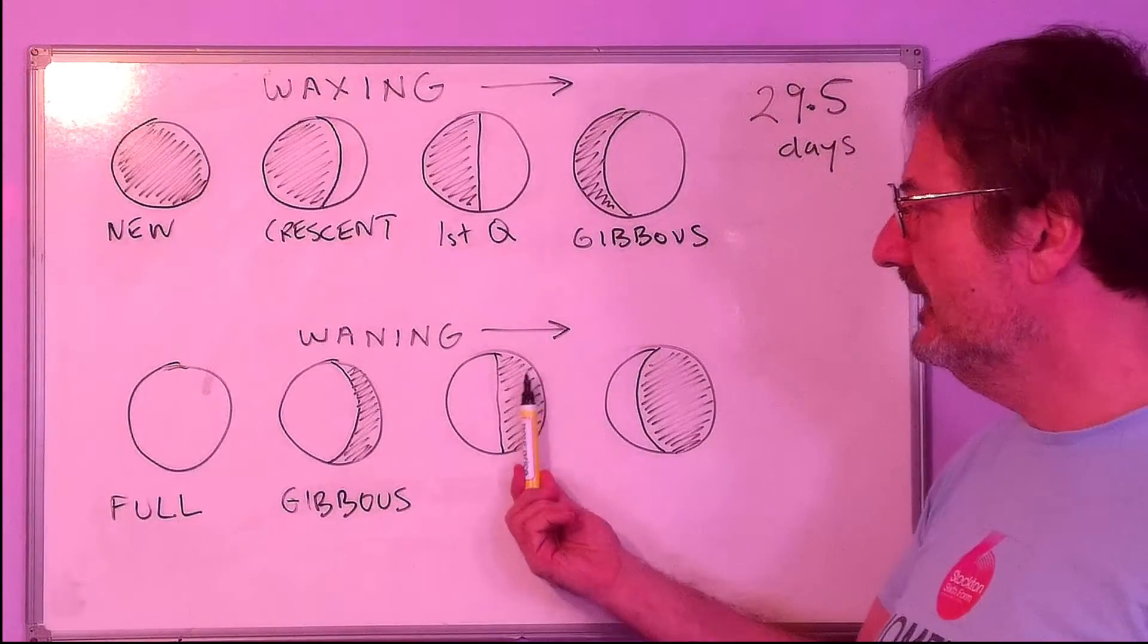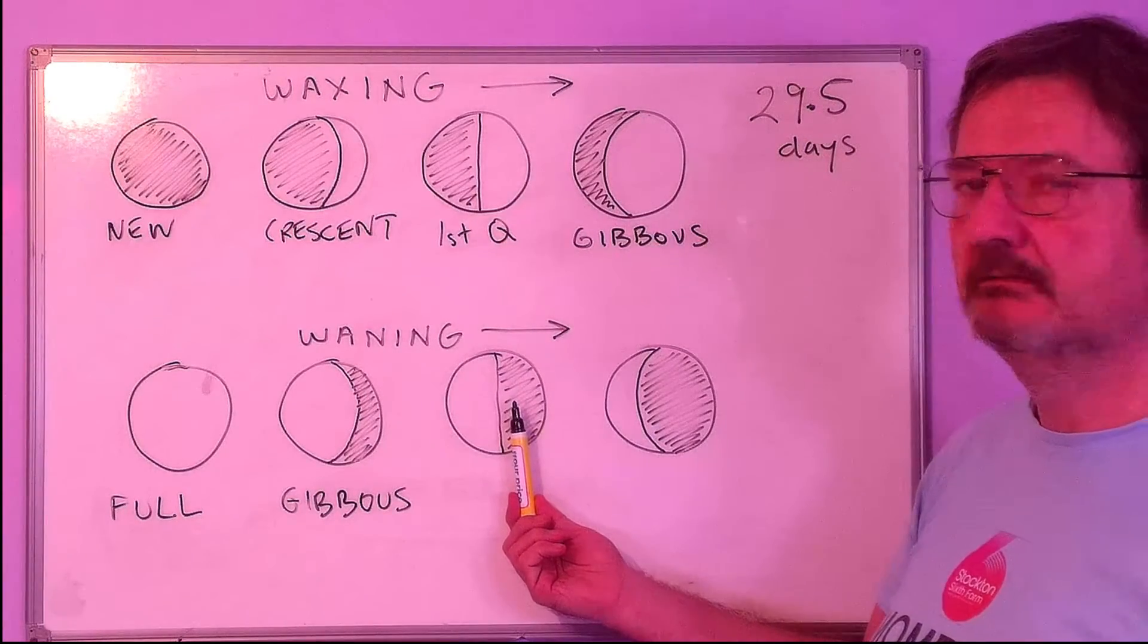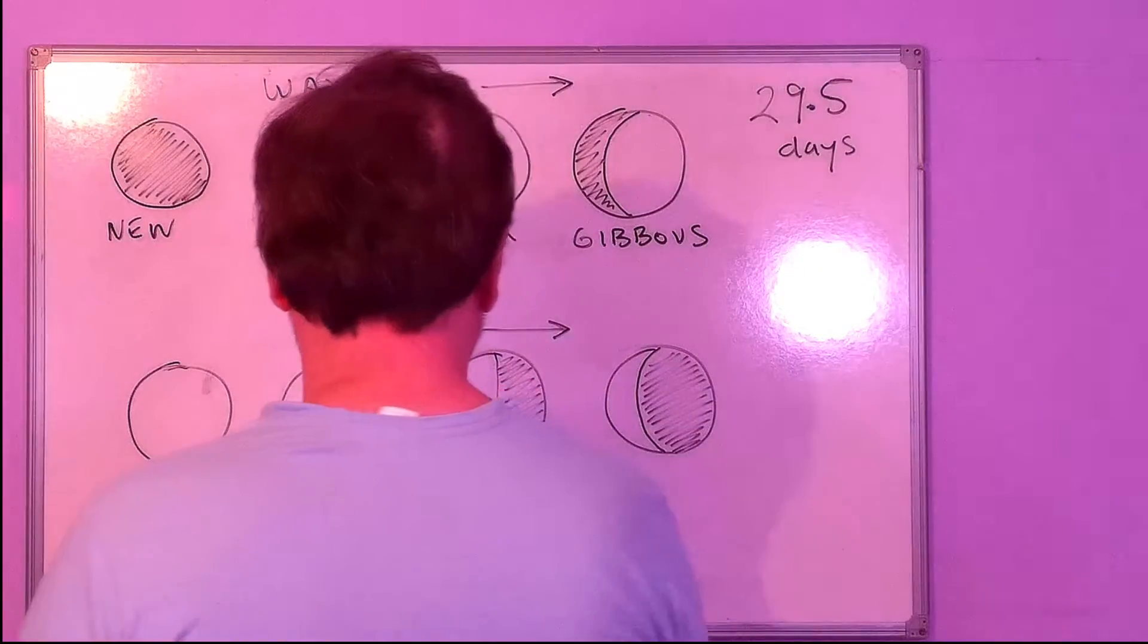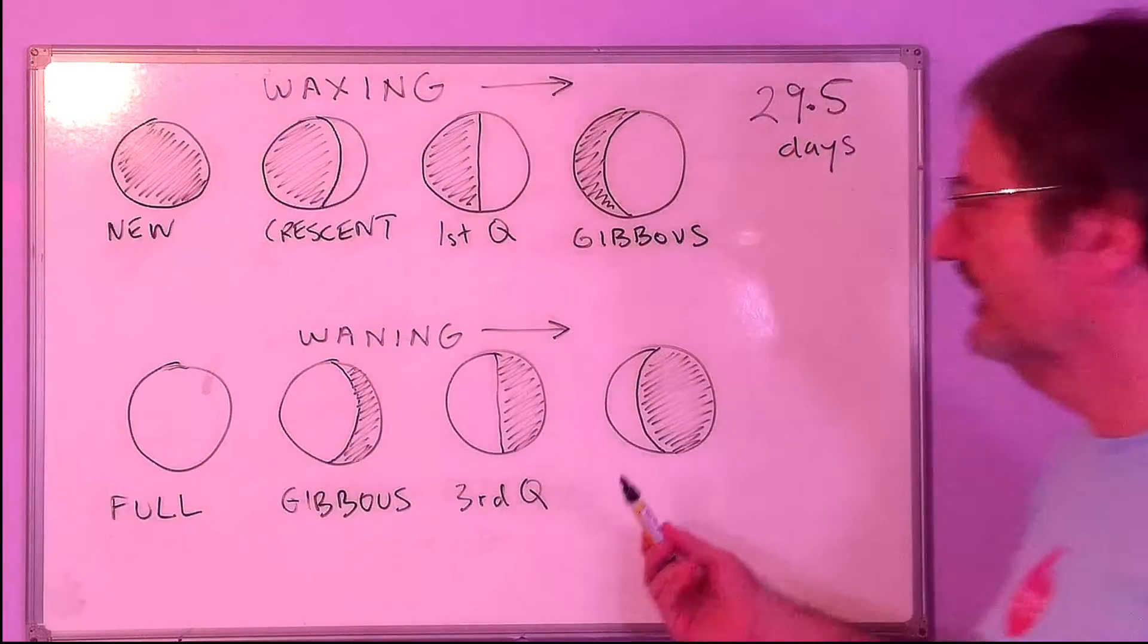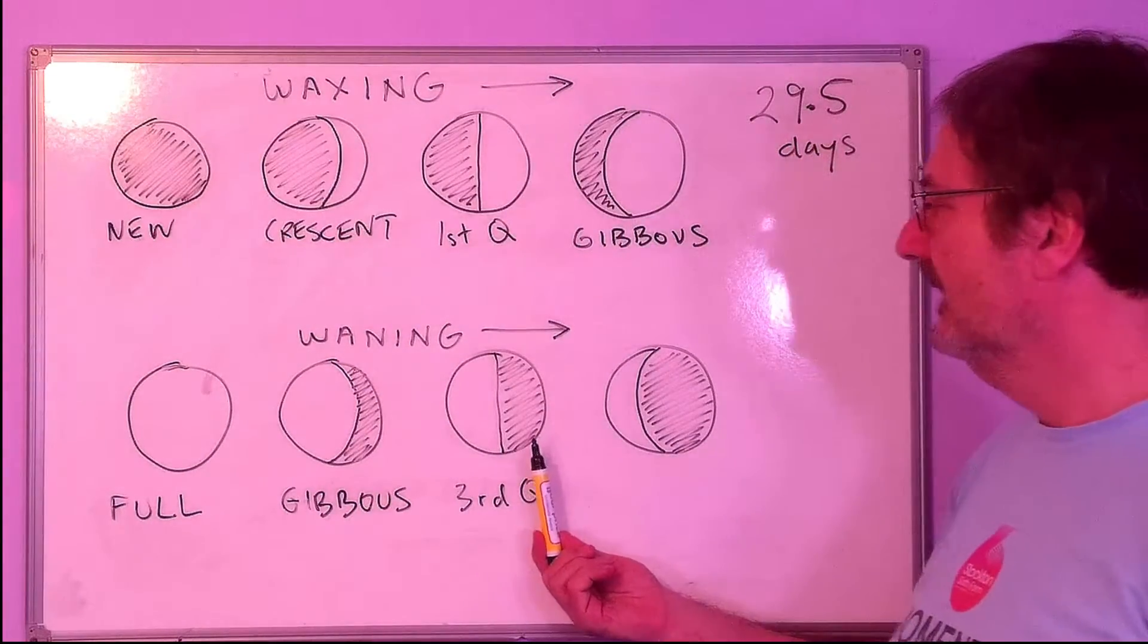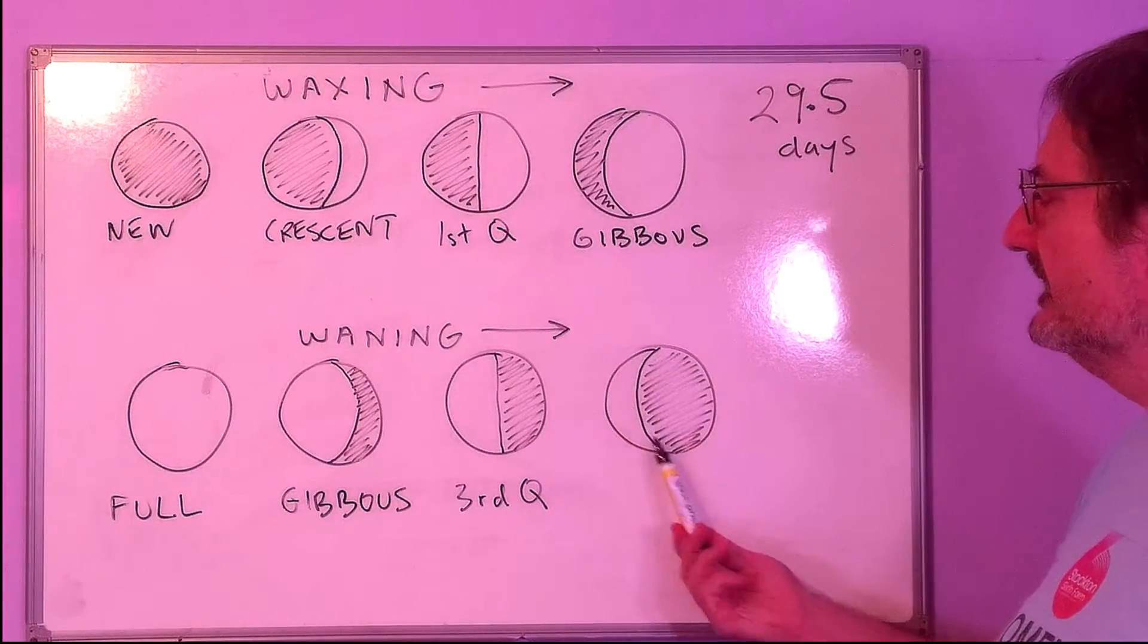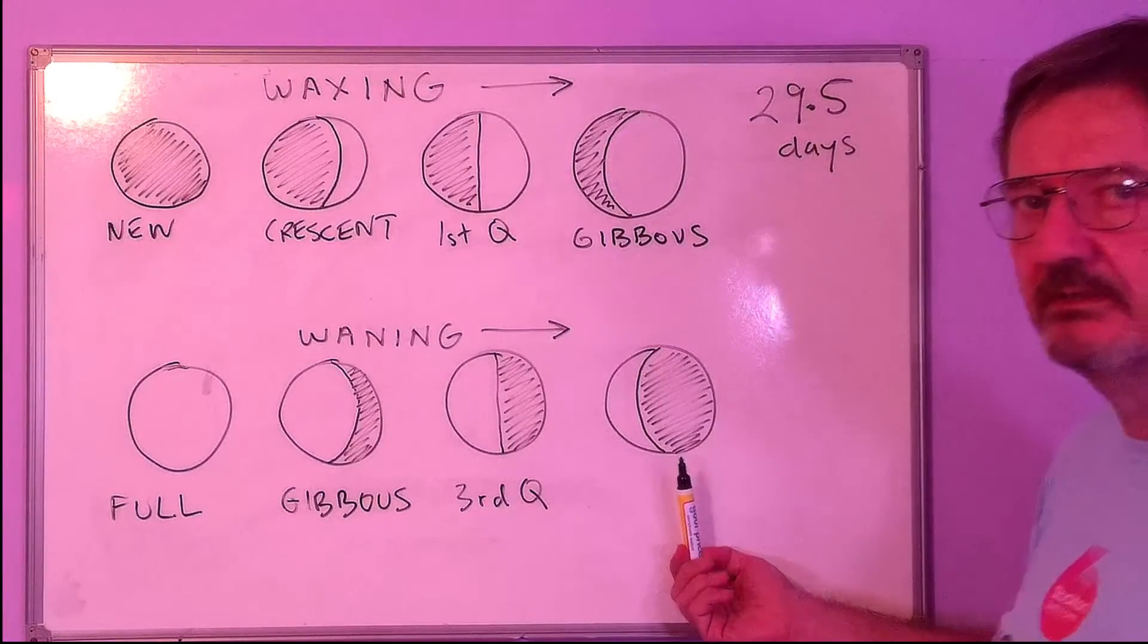Here we can see half of the face of the moon, and that's a waning, no it's not, it's a third quarter. That's the third quarter, and then the darkness moves in even more, and now all we can see is a crescent on this side, and that's called a waning crescent.